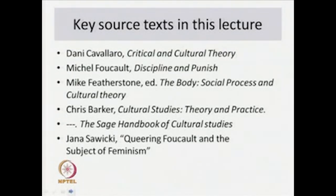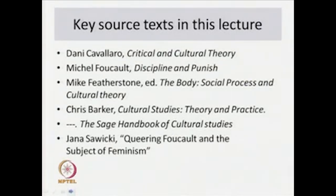The key source texts for this lecture include Danny Cavallaro's Critical and Cultural Theory, Michel Foucault's important work Discipline and Punish, Mike Featherstone's edited book The Body: Social Process and Cultural Theory, Chris Barker's Cultural Studies: Theory and Practice, the Sage Handbook of Cultural Studies also by Chris Barker, and Jana Savicke's Queering Foucault and the Subject of Feminism. These are by no means the only books we may consult, but for the present lesson let us look at these texts.